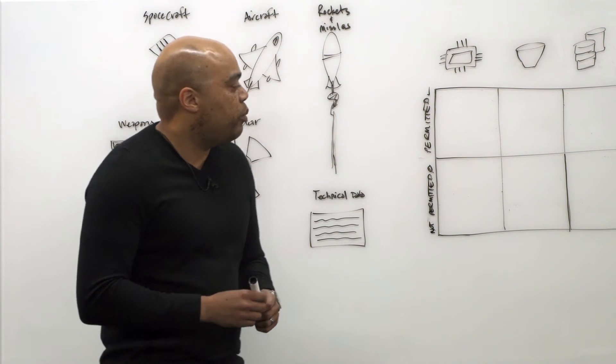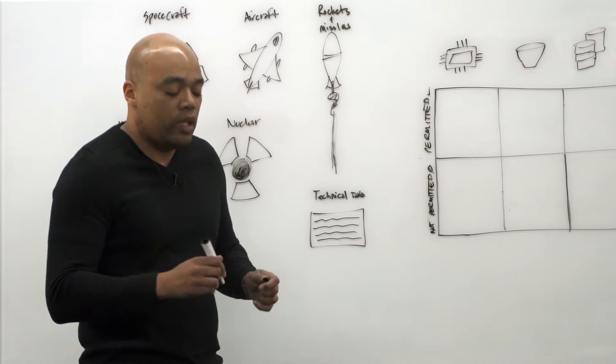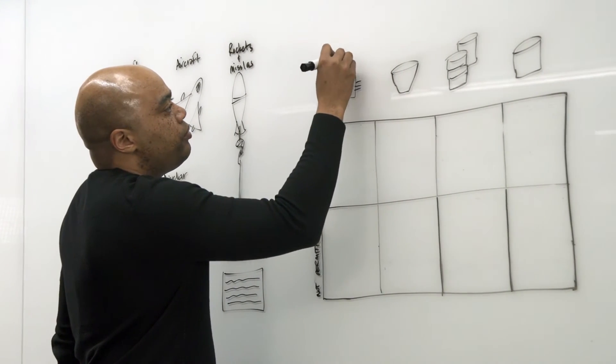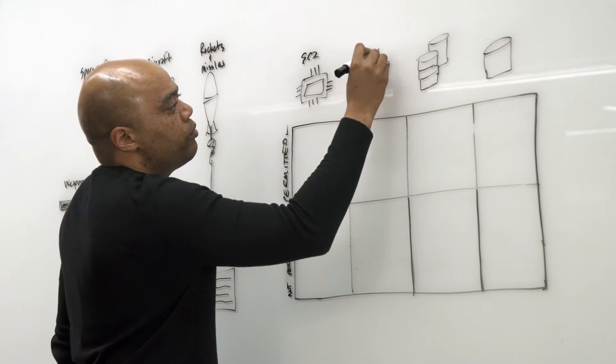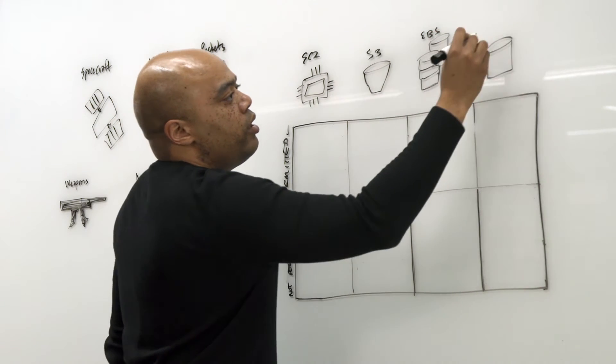But let's use a real example to illustrate this. So we're going to use four common services that are available in the GovCloud region. Let's look at EC2, S3, EBS, and RDS.